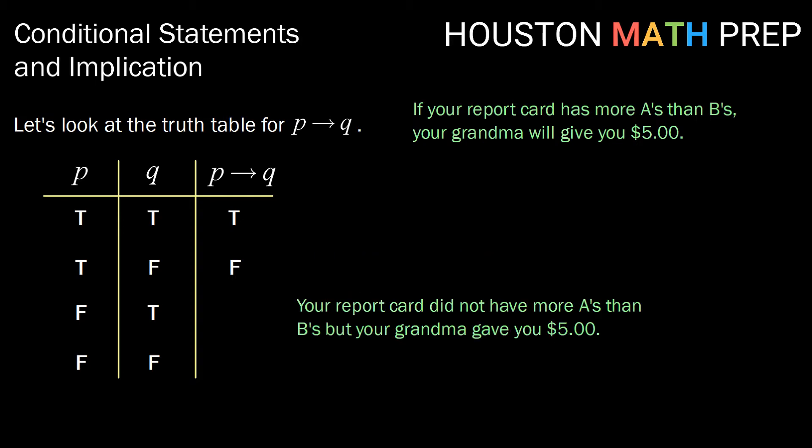In our next instance, false, true: your report card did not have more A's than B's — that's P false — but your grandma did give you $5 — that's Q true. Here, your grandma didn't break her promise; she was just extra generous. So promise kept means we get a true truth value.